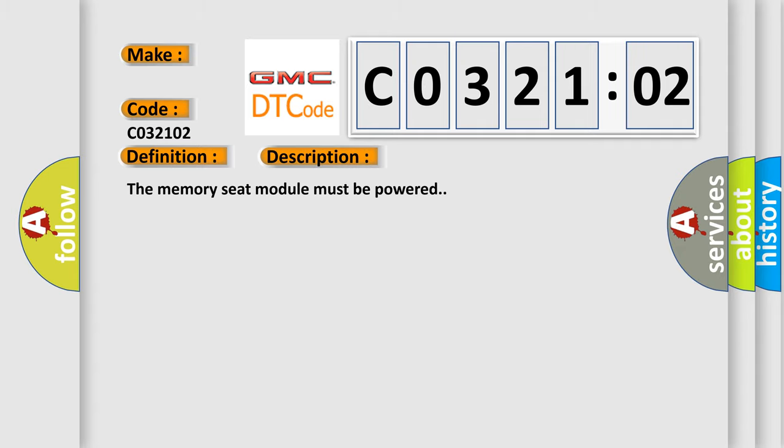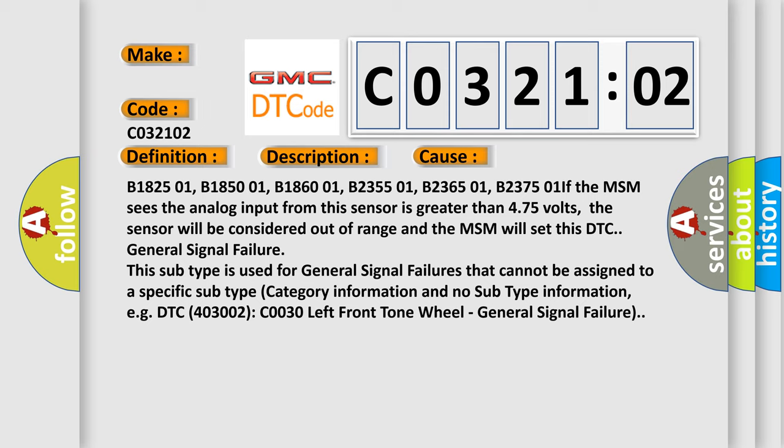The memory seat module must be powered. This diagnostic error occurs most often in these cases: B1825 01, B1850 01, B1860 01, B2355 01, B2365 01, B2375 01. If the MSM sees the analog input from this sensor is greater than 4.75 volts, the sensor will be considered out of range and the MSM will set this DTC general signal failure. This subtype is used for general signal failures that cannot be assigned to a specific subtype category information and no subtype information, e.g. DTC 403002 C0030 left front tone wheel, general signal failure.